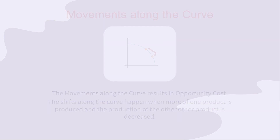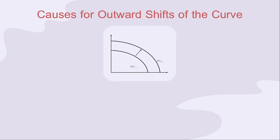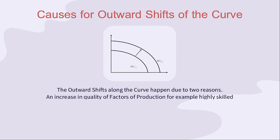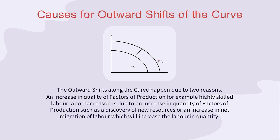Now, let's see the reasons for the outward shift of the curve. The outward shifts happen due to two reasons. The first reason is an increase in the quality of factors of production — for example, highly skilled labor. Another reason is due to an increase in the quantity of factors of production, such as a discovery of new resources or an increase in net migration of labor, which will increase the labor in quantity.